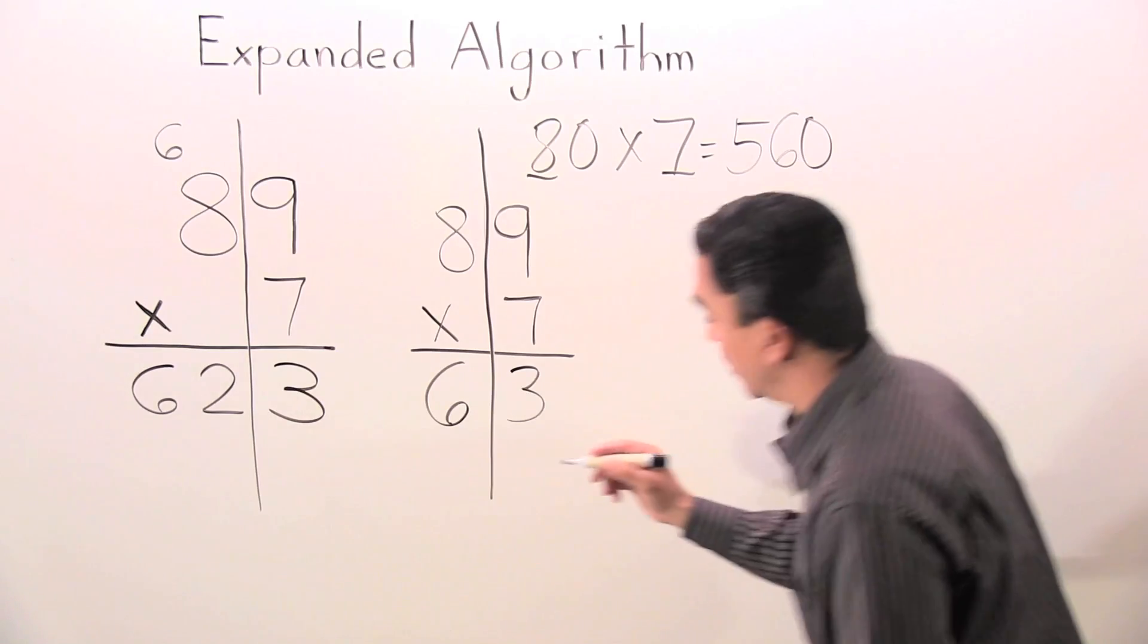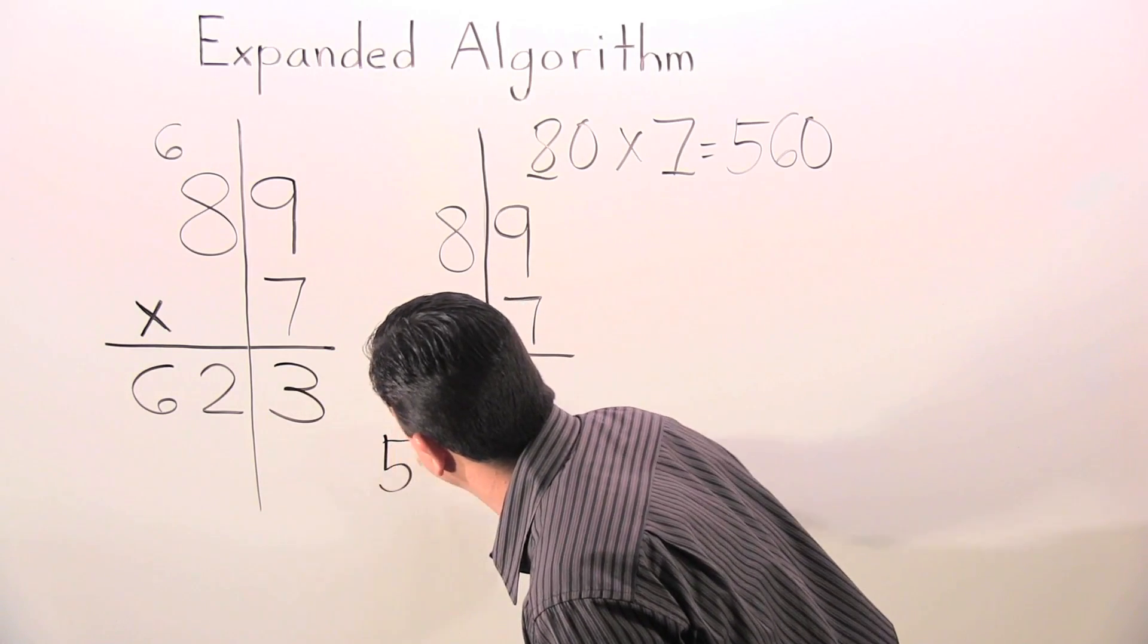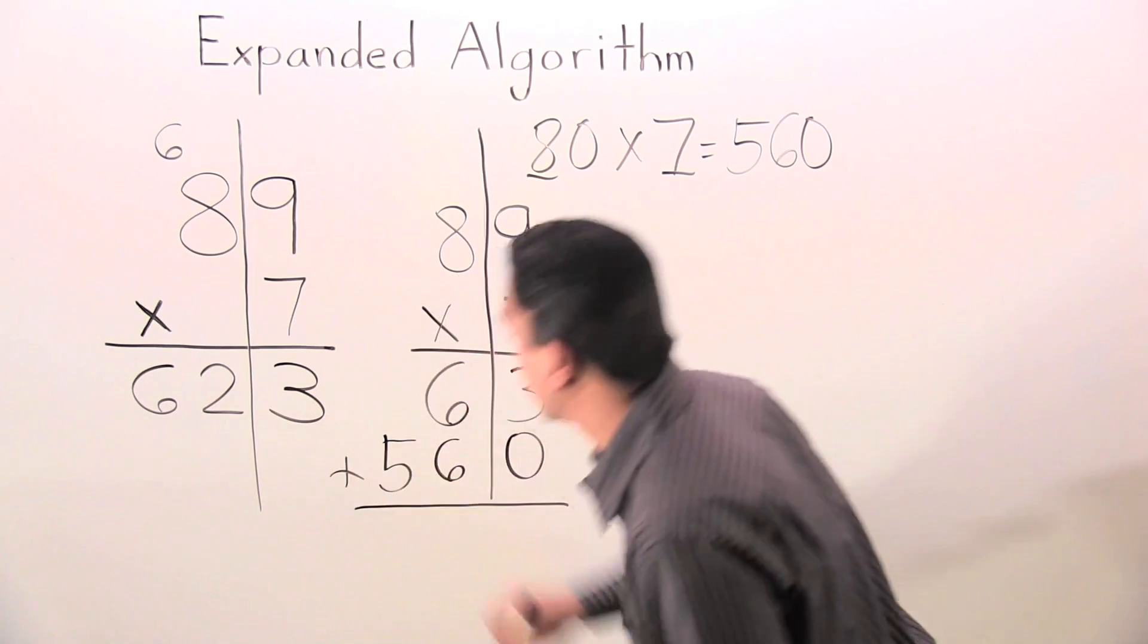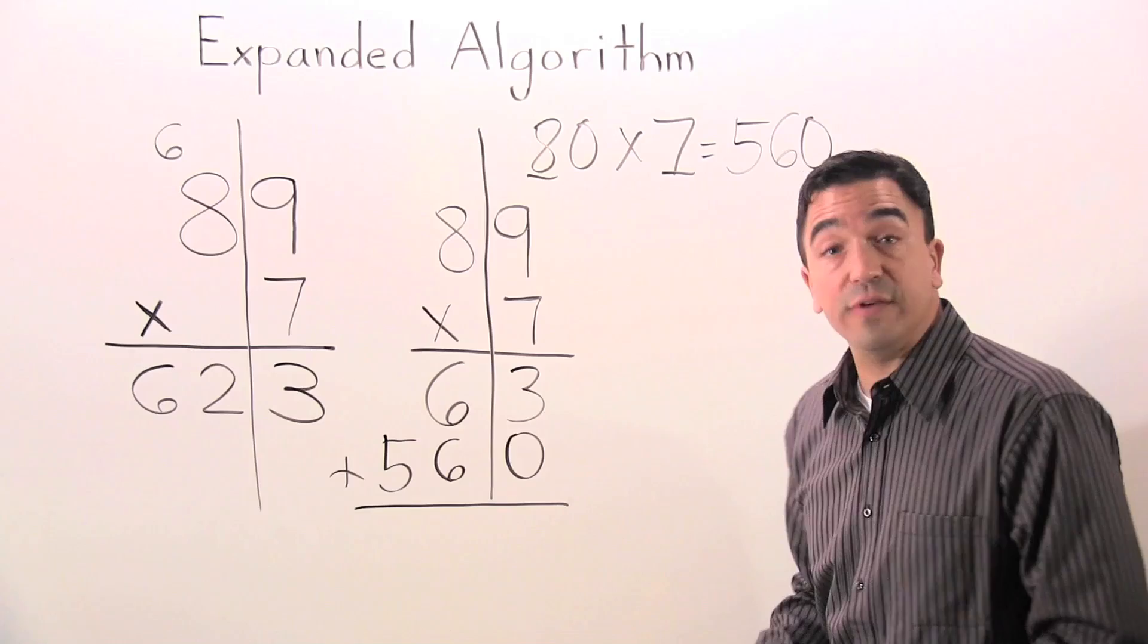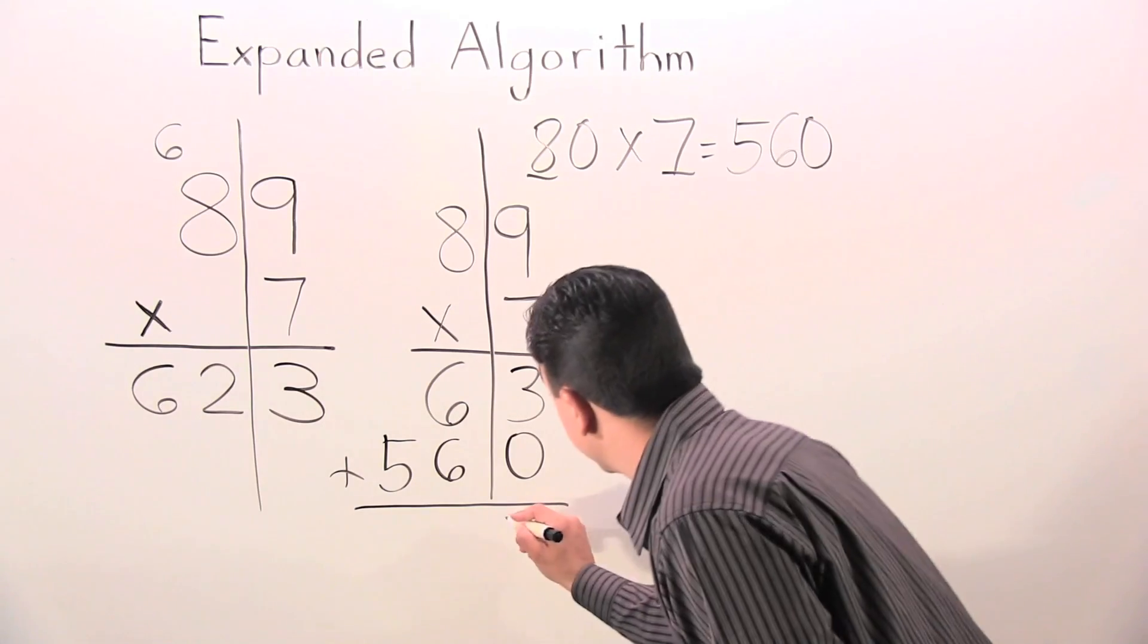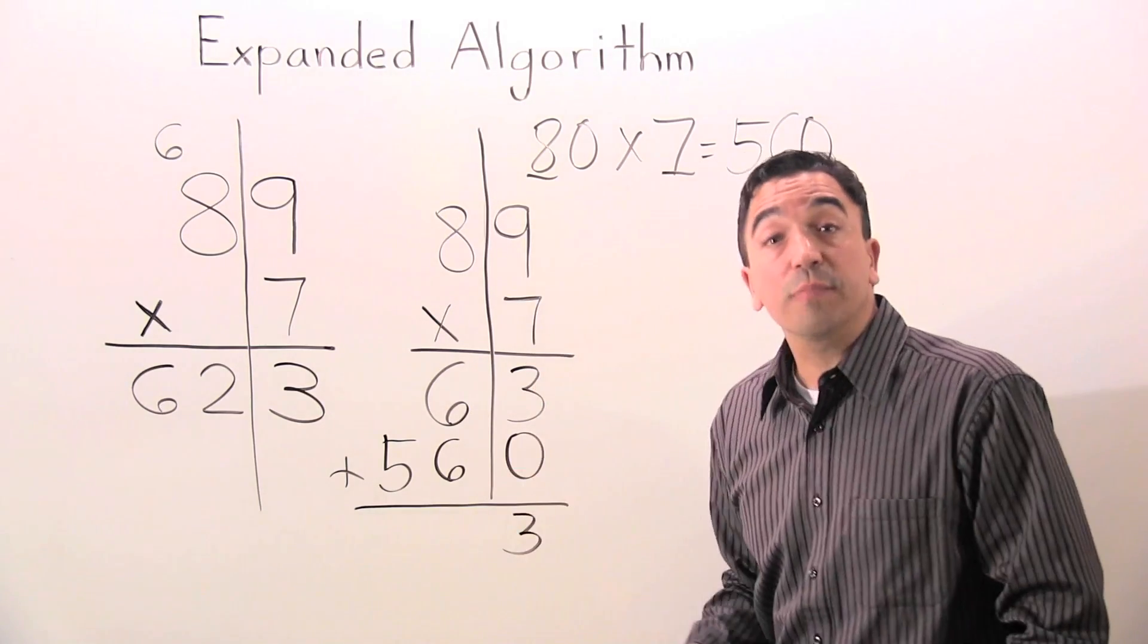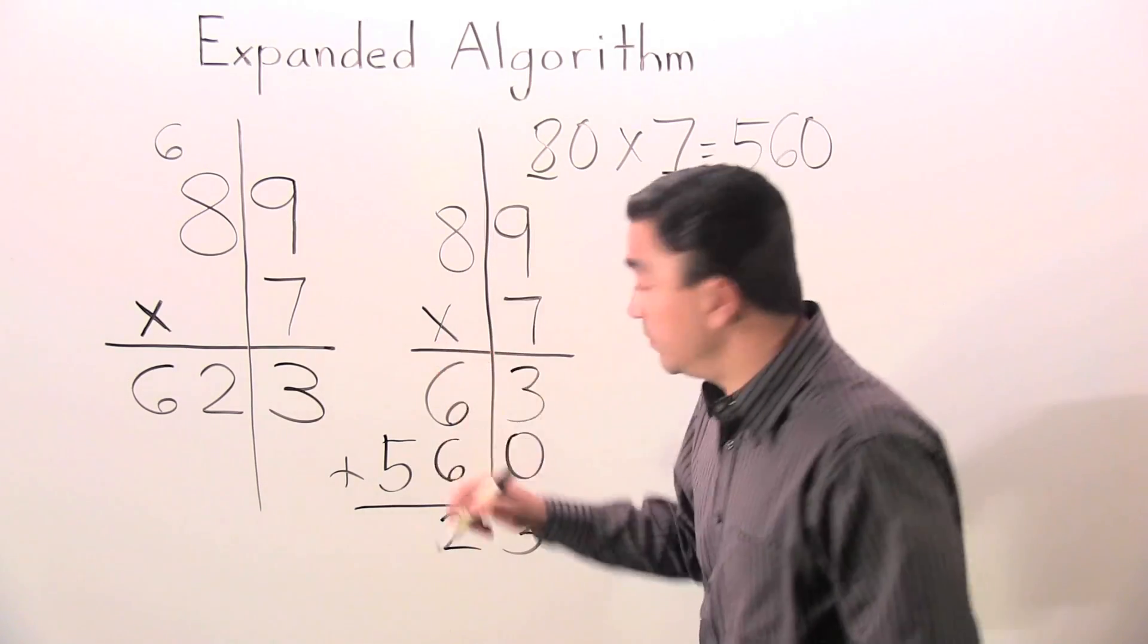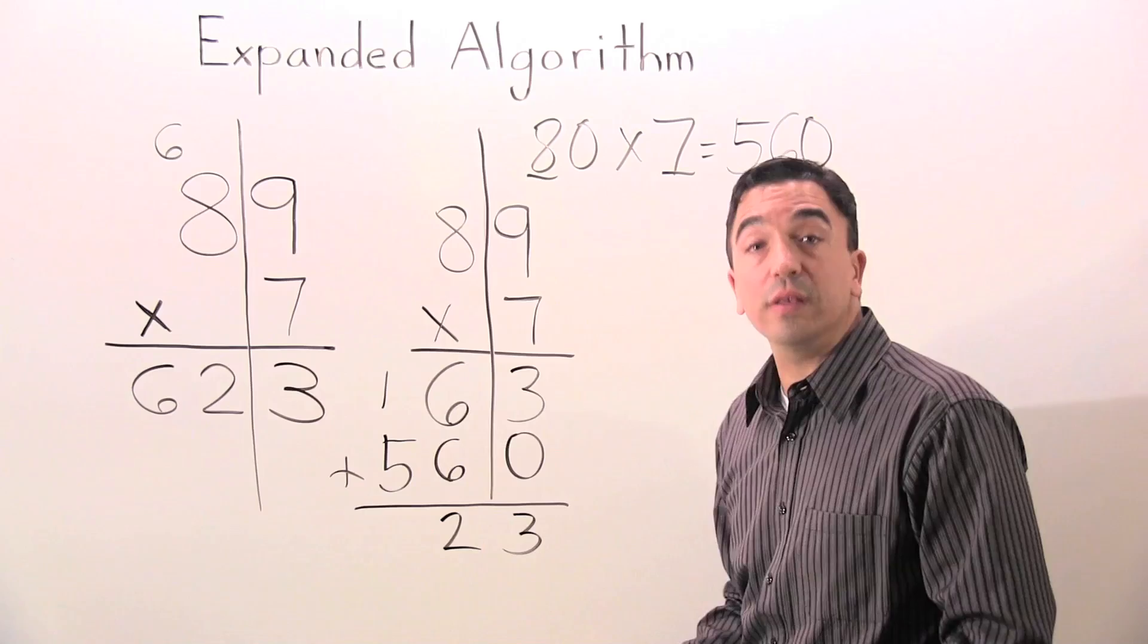Now, I'm going to put it down here. Now we're going to add it together. 3 plus 0? 3. 6 plus 6? 12. Regroup the 1. 5 plus 1? 6.